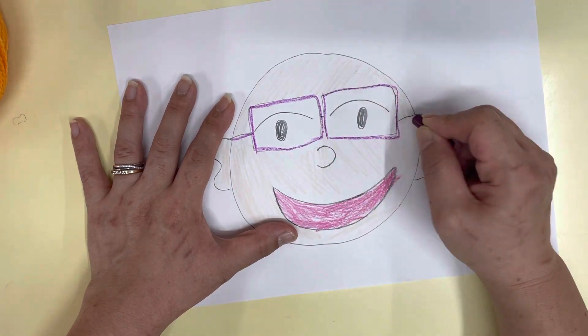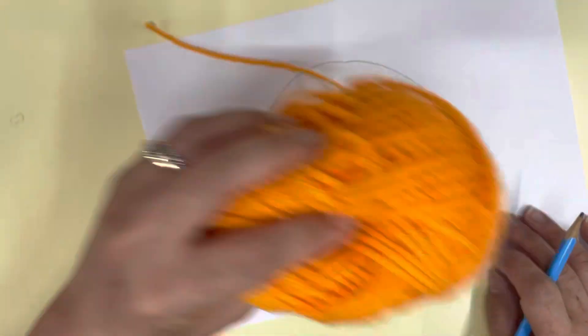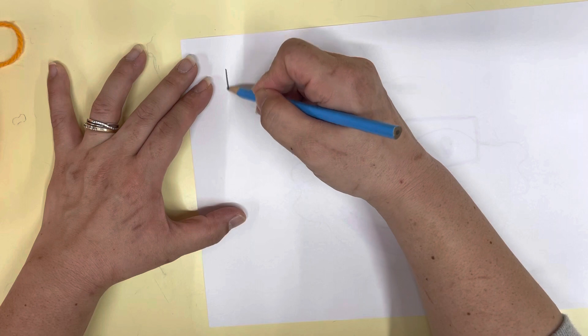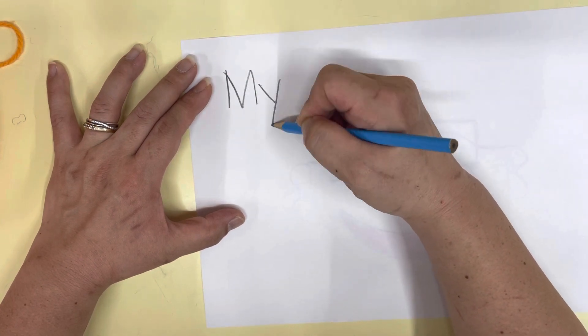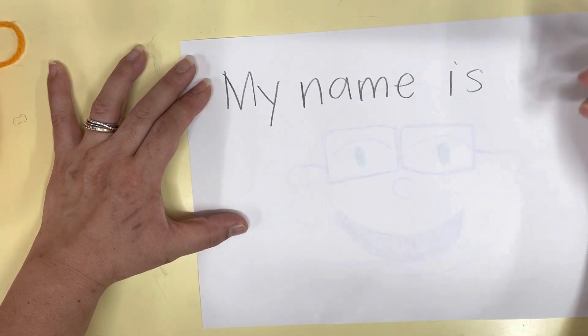And then before we use our special item, let's write at the back first. All right, ready? Write 'My name is Hitomi.'